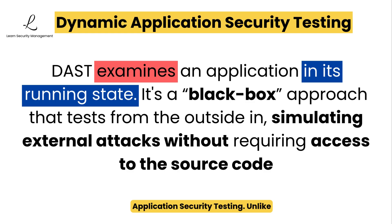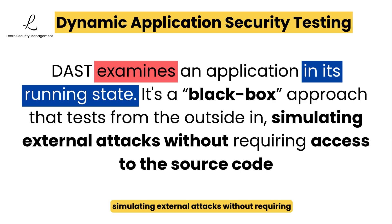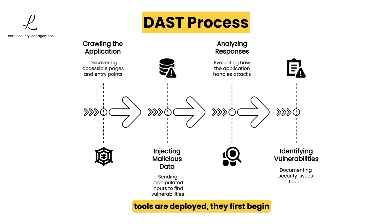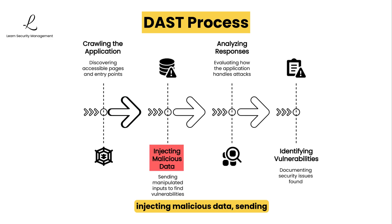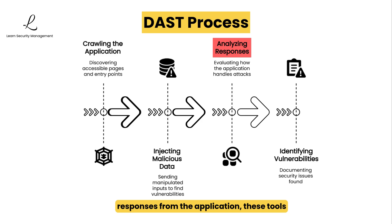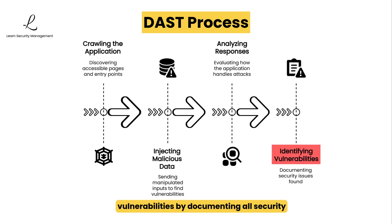Now let's talk about DAST, Dynamic Application Security Testing. Unlike SAST, DAST examines an application in its running state. It's a black box approach that tests from the outside in, simulating external attacks without requiring access to the source code. When DAST tools are deployed, they first begin crawling the application, systematically mapping all accessible pages and potential entry points a hacker might target. Then they start injecting malicious data, sending specifically crafted inputs designed to trigger security flaws. By analyzing responses from the application, these tools observe how each component reacts to attempted exploits. Finally, they identify vulnerabilities by documenting all security issues discovered during testing, creating a comprehensive report of exploitable weaknesses.